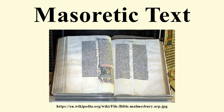Ben Asher was the last of a distinguished family of Masoretes extending back to the latter half of the 8th century. Despite the rivalry of Ben Naftali and the opposition of Saadia Gaon, the most eminent representative of the Babylonian school of criticism, Ben Asher's codex became recognized as the standard text of the Bible. See Aleppo Codex and Codex Cairensis. Most secular scholars conclude that Aaron Ben Asher was a Karaite, though there is evidence against this view.